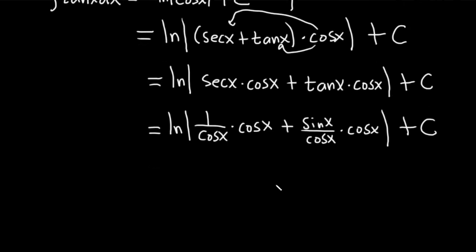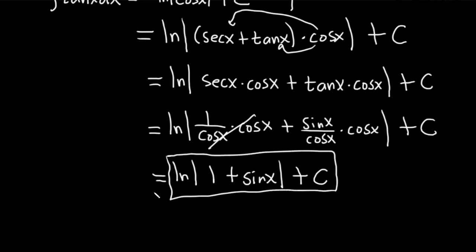And now we get some wonderful cancellation, which is really cool. This is equal to the natural log absolute value. So it's going to be 1 plus sine of x, absolute value plus C. So that would be your final answer in this problem.